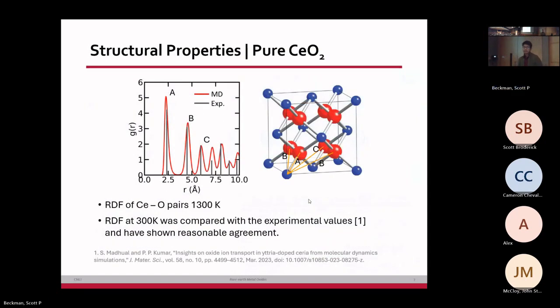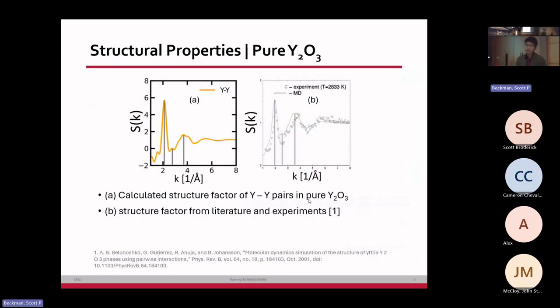We also calculated the structural properties for pure yttria and pure ceria. In this case, we compared the 1300 Kelvin ceria RDF for ceria and oxygen pairs with experimental values, which has been in good agreement. We validated the structure that the potential is simulating is a fluorite structure for ceria. Furthermore, we calculated the structure factor for yttria and validated that with experiment as well, with reasonable agreement.